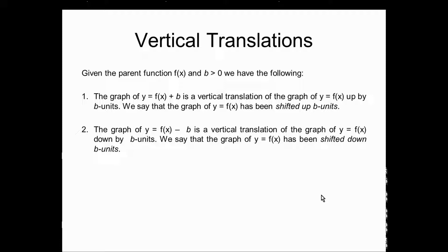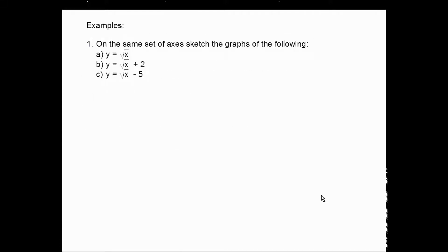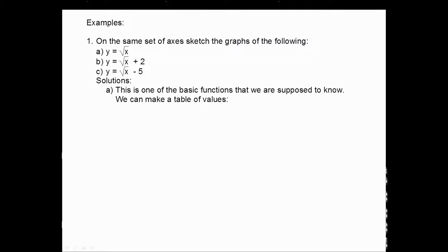Let's try some examples. On the same set of axes, sketch the graphs of: (a) y = √x — our basic parent graph; (b) y = √x + 2 — the plus 2 is not with x, so this goes up 2 units; and (c) y = √x − 5 — the minus 5 is not with x, so this goes down 5 units.